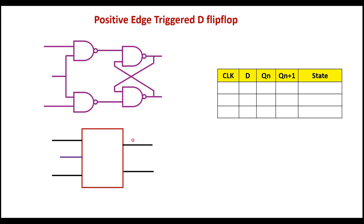This is the circuit. In my previous video, we studied about clocked SR flip-flop. As we know in clocked SR flip-flop, this was the S input and this was the R input. This was the clock input. We have two outputs Q and Q bar. In clocked D flip-flop, the complement of S input is connected to R input.